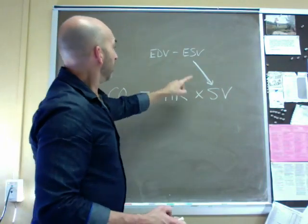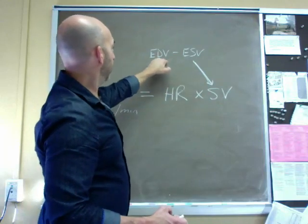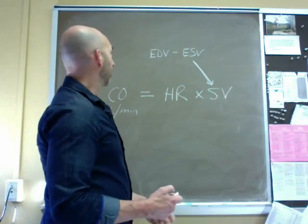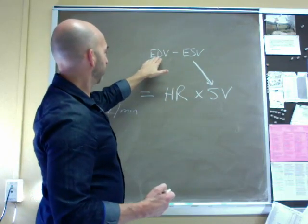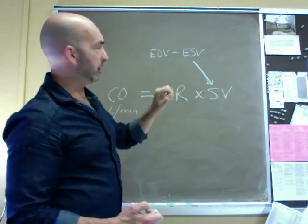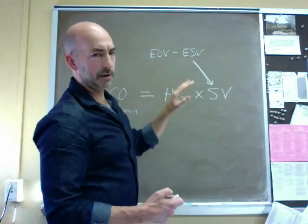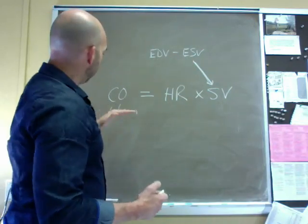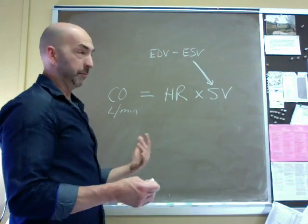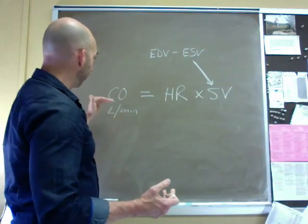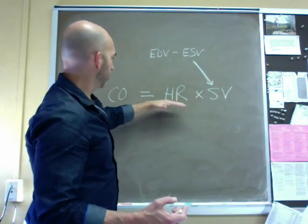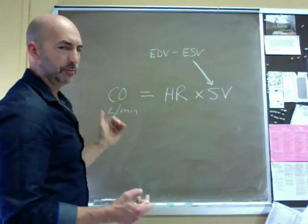Now the reason I have an arrow here to stroke volume from EDV and ESV is because stroke volume is really the difference between the two. And so we have mechanisms of adjusting EDV alone, mechanisms that adjust ESV alone, and then of course we're going to come to one where changing EDV actually directly affects ESV. Cardiac output is highly variable. We need to change it based upon need. The easy example is during exercise when we need more blood flow, and so we're going to see how altering these two variables combine to adjust cardiac output based upon need.